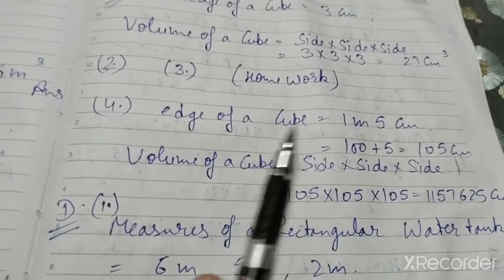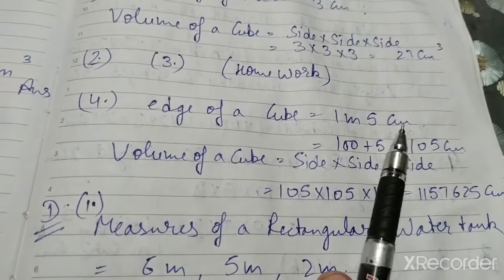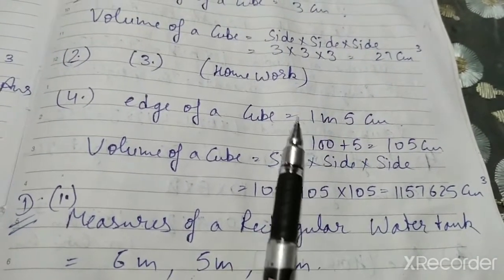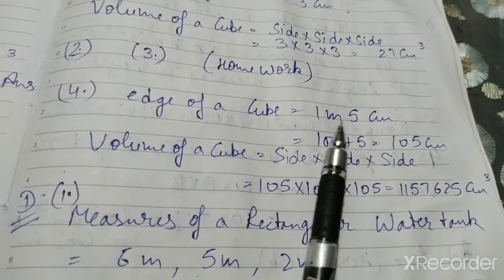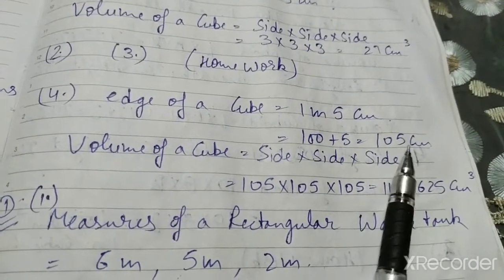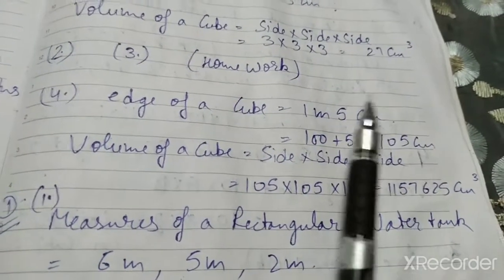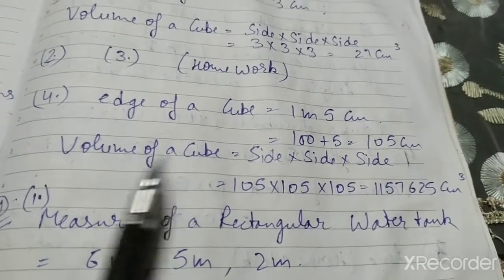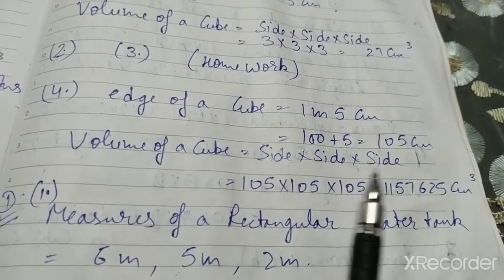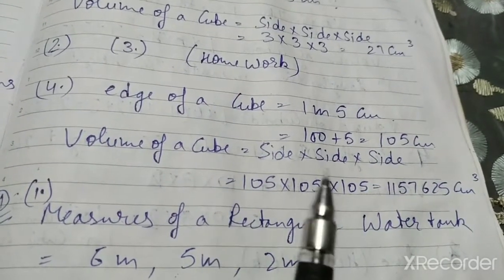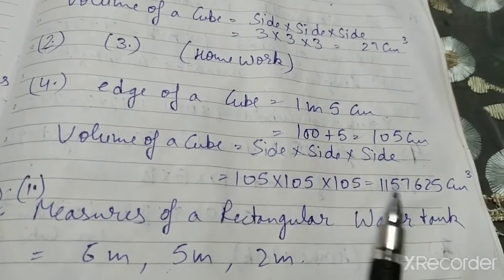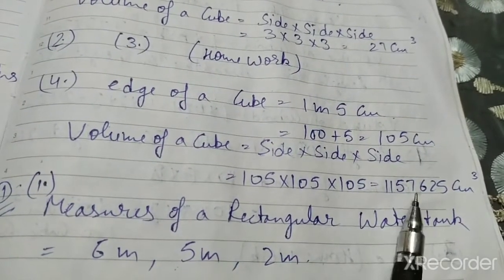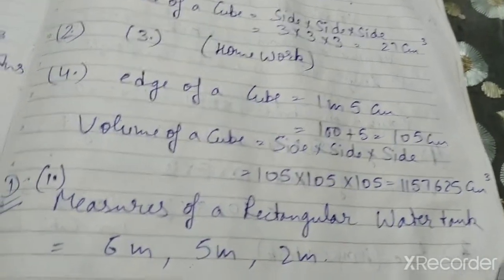Question 4 is slightly different because the edge is 1 meter 5 cm. I converted 1 meter to centimeters: 100 cm plus 5 cm = 105 cm. So we write 1 m 5 cm as 105 cm. Volume of a cube = side × side × side = 105 × 105 × 105 = 11,57,625 cm³.